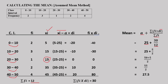Computing di: 5 minus 25 is negative 20; 15 minus 25 is negative 10; 25 minus 25 is 0; 35 minus 25 is 10; 45 minus 25 is 20. So di values are: -20, -10, 0, 10, 20.